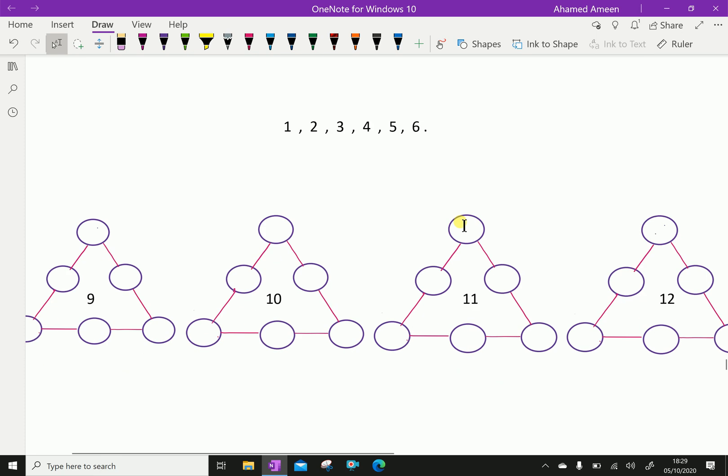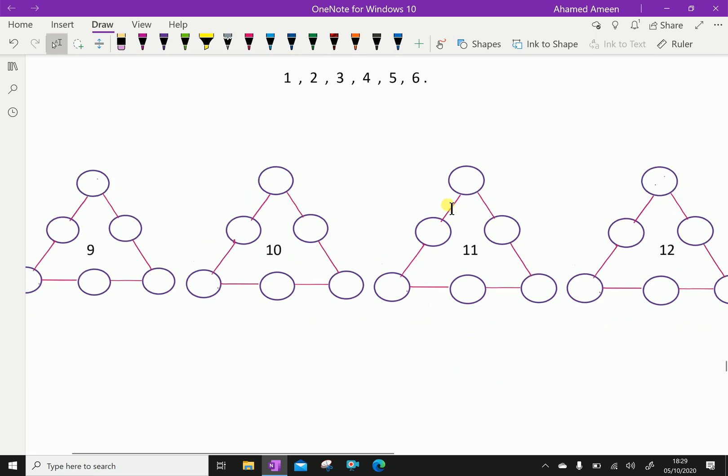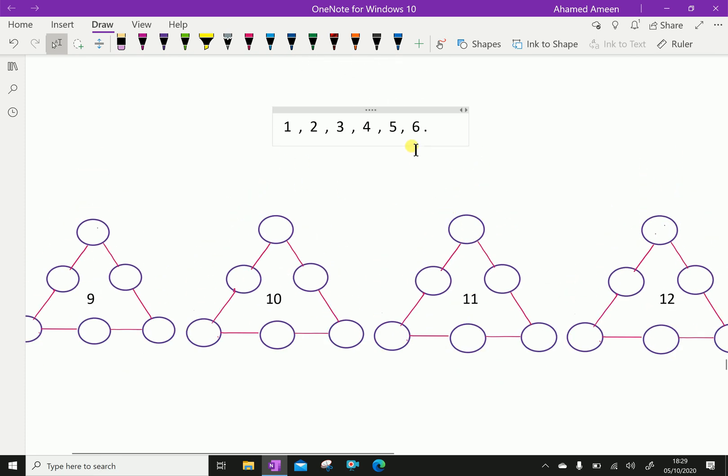Now, we'll discuss how to form your own magic triangle with the given numbers 1, 2, 3, 4, 5, 6. So there are four possible ways. Before that, we have to find a center number, that is a magical number. How to find that?